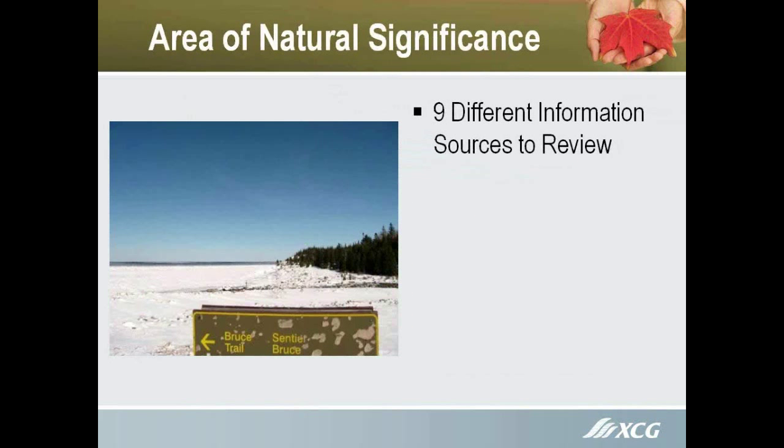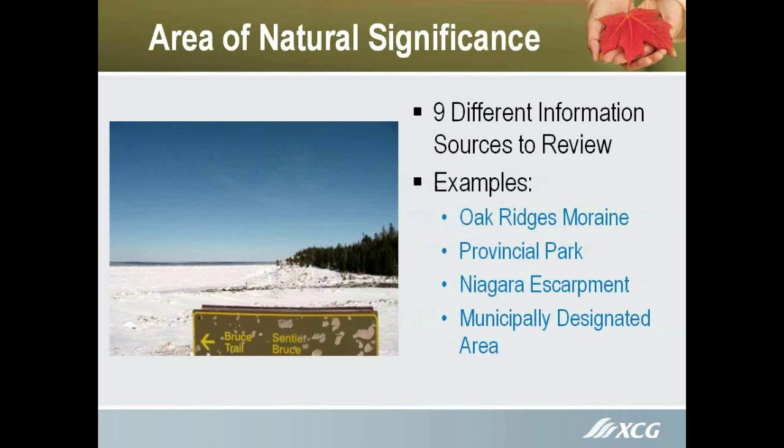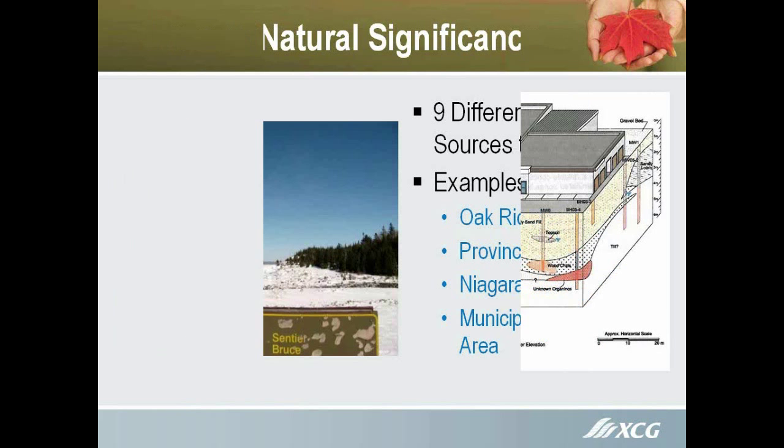Area of natural significance — some examples: the Oak Ridges Moraine, Provincial Parks, Niagara Escarpment, National Parks, any municipally designated area. In other words, an area that a municipality or regional government has designated as an area of natural significance. There are also nine sources of information we have to look at, one of which is environmentally sensitive species, species at risk — things like that that have to be considered.